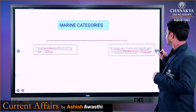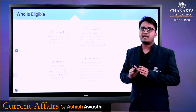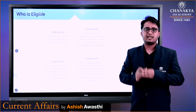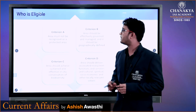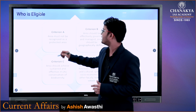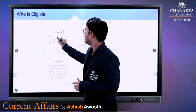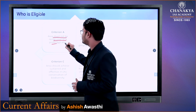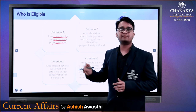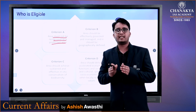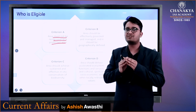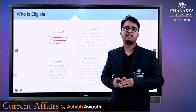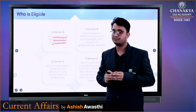अब जानना जरूरी हो जाता है कि OECM बनाने के लिए क्या Criteria रखे गए हैं। पहला Criteria है: Area Must Not Be Recognized as a Protected Area। इसका मतलब यह है कि यदि पहले से ही वो Area National Park या Sanctuary है, जिसको सरकार ने designate किया है, तब फिर वो OECM में नहीं आएगी।